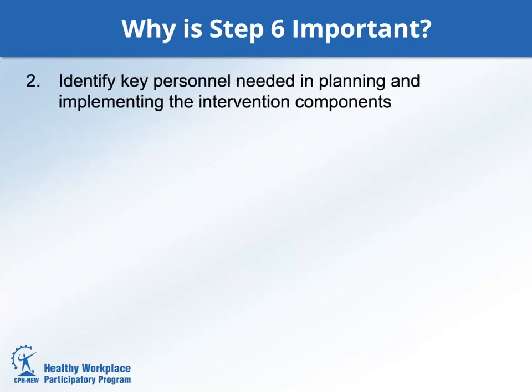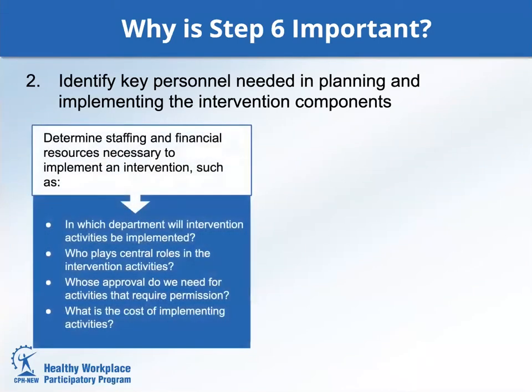Two: identify key personnel needed in planning and implementing the intervention components. First, determine staffing and financial resources necessary to implement an intervention, such as: in which department will intervention activities be implemented? Who plays central roles? Whose approval do we need for activities that require permission? And what is the cost of implementation activities—for example, vendors, equipment, training, personnel time, and existing resources within the organization?